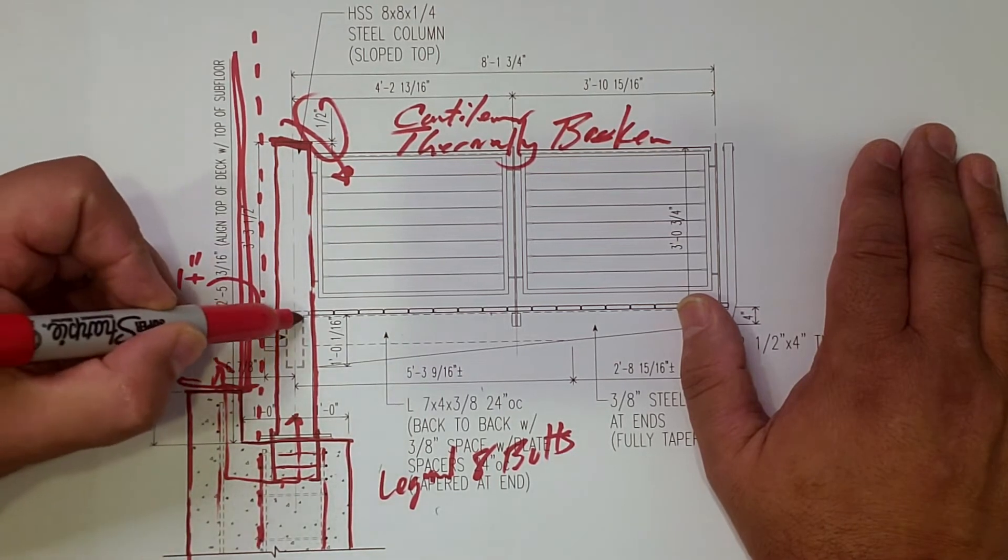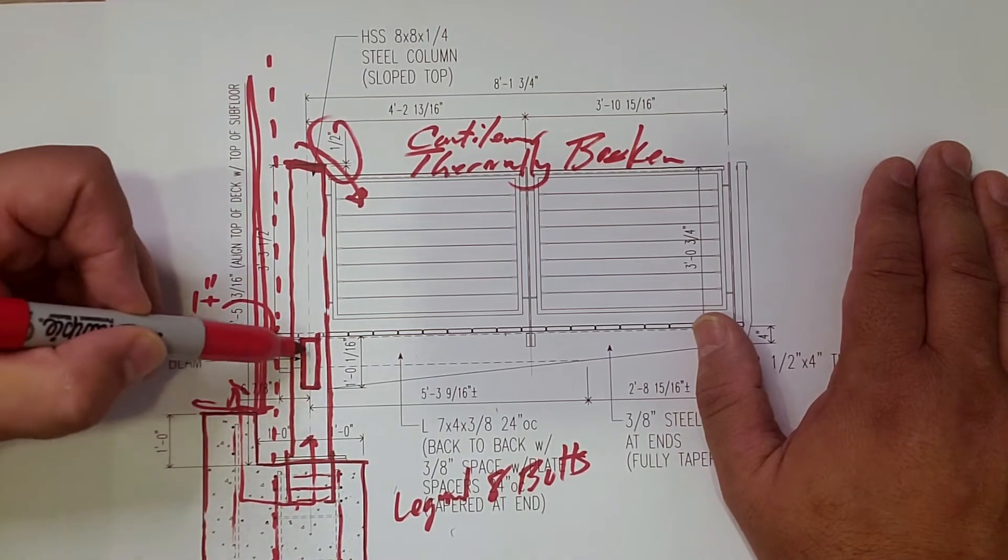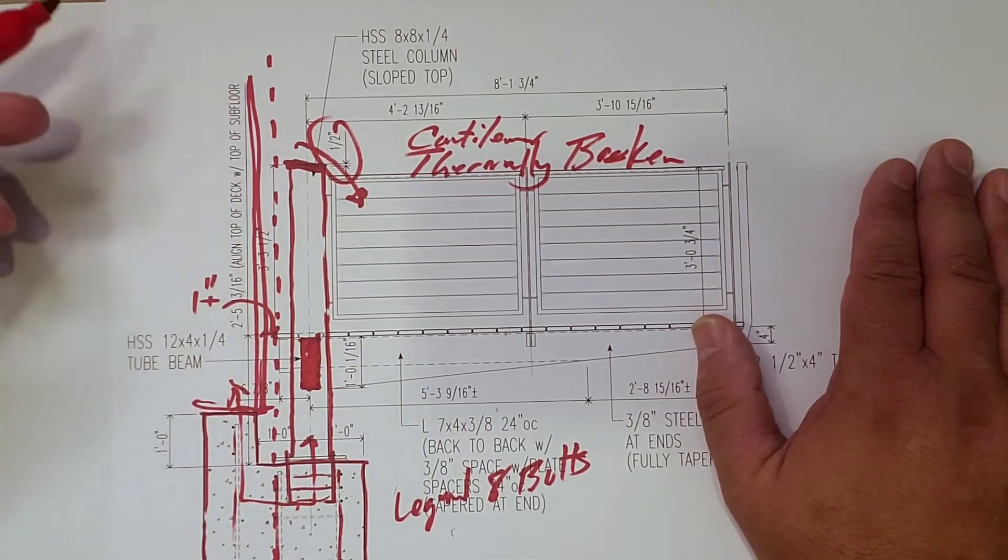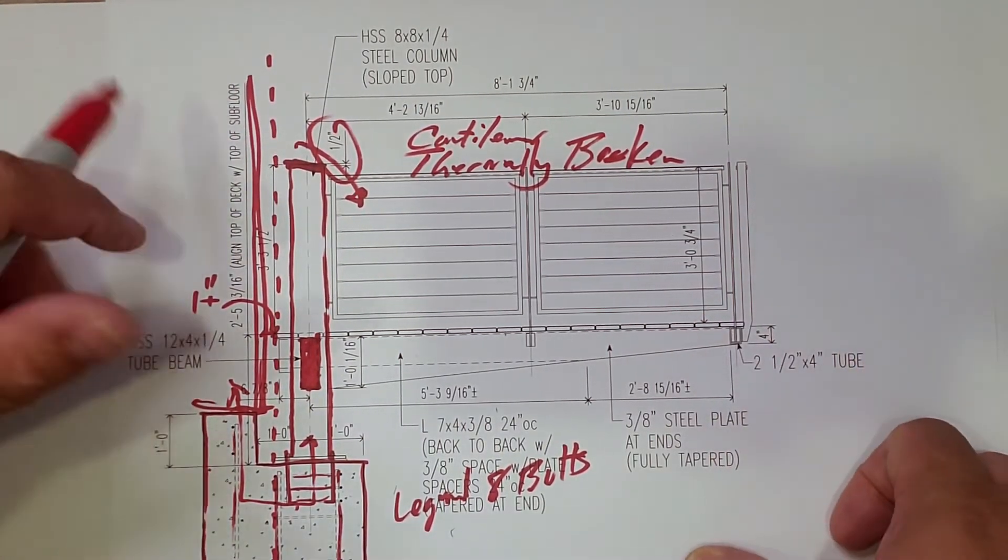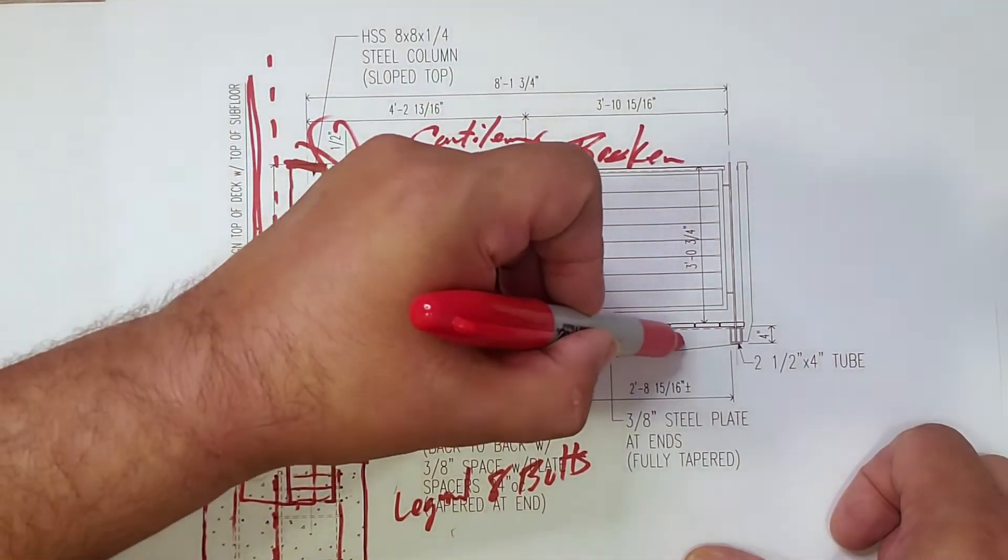And then, as a bridge, we have this 4x12 that runs in between the posts. So, it's built basically like a goal post, and then we have these angles come out to here, and then they taper.